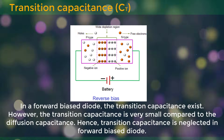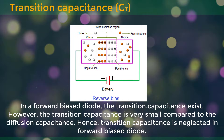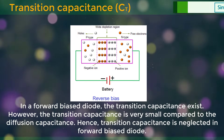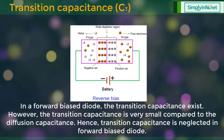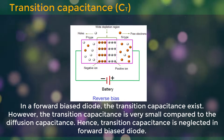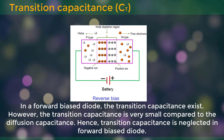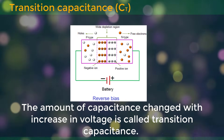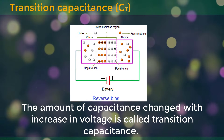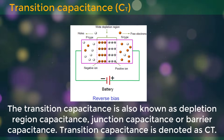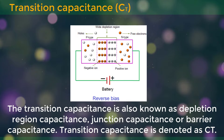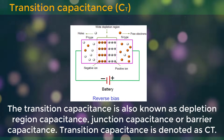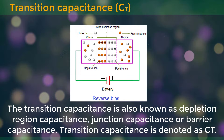In a forward biased diode, the transition capacitance exists. However, the transition capacitance is very small compared to the diffusion capacitance. Hence, transition capacitance is neglected in a forward biased diode. The amount of capacitance changed with increase in voltage is called transition capacitance. The transition capacitance is also known as depletion region capacitance, junction capacitance, or barrier capacitance. The transition capacitance is denoted as CT.